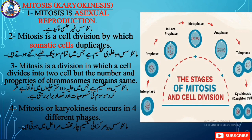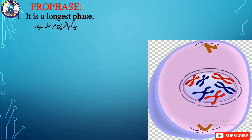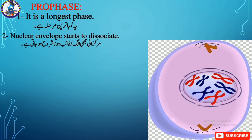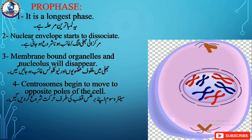Mitosis, or karyokinesis, occurs mainly in four different phases. The first phase is prophase. Prophase is the longest phase. In this phase, the nuclear envelope — also called the nuclear membrane — starts to dissociate. Membrane-bound organelles such as endoplasmic reticulum, mitochondria, and nucleolus will disappear. Centrioles begin to move to the opposite poles of the cell to form microtubules.